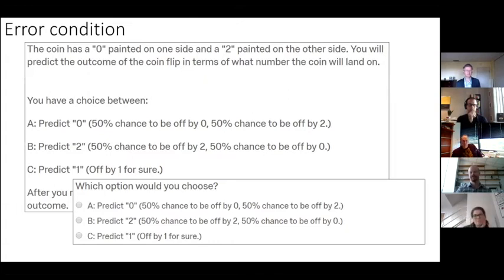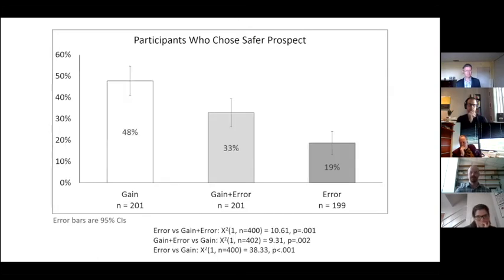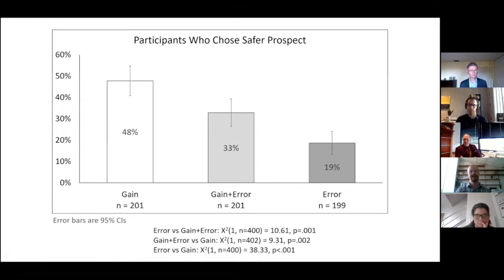These results are at least consistent with participants having some valuation of gains, some valuation of error, and aggregating these when they realize both. If material outcomes were the only thing people cared about, participants in the gain-and-error condition should make identical choices to those in the gain condition. The fact that they fall in between suggests error independently enters their preferences. One important alternative explanation to address: perhaps people didn't want to bet on one simply because one wasn't an actual outcome of the coin flip — it had zero probability of occurring, so they may have been unwilling to select it regardless of any error-based preferences.